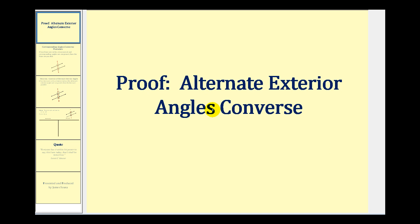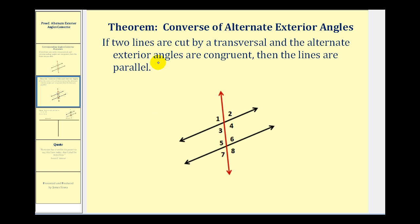Welcome to a proof of the alternate exterior angles converse. This theorem states that if two lines are cut by a transversal and alternate exterior angles are congruent, then the lines are parallel. So if angle one is congruent to angle eight, or angle two is congruent to angle seven, the two lines would be parallel.